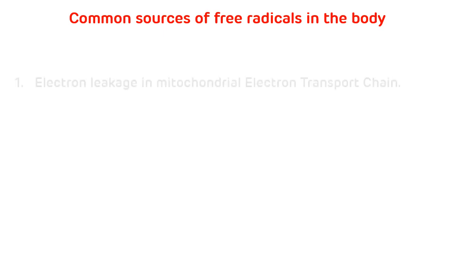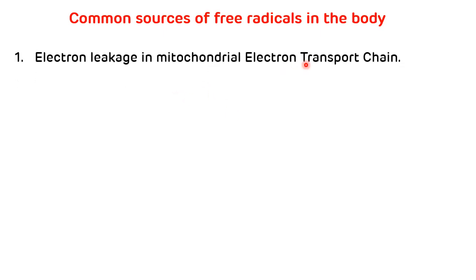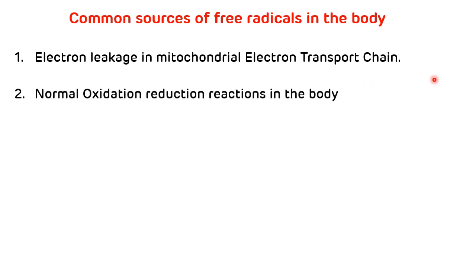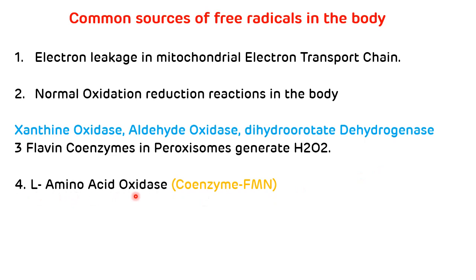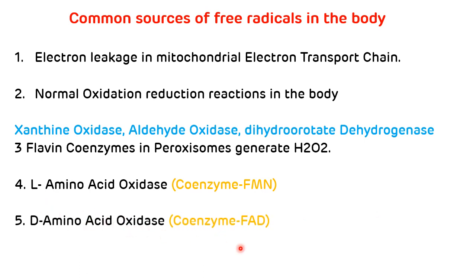Now, common sources of free radicals in the body: the first is electron leakage in the mitochondrial electron transport chain. Second are normal oxidation-reduction reactions, such as reactions catalyzed by xanthine oxidase, aldehyde oxidase, and dihydroorotate dehydrogenase. Flavin coenzymes in peroxisomes generate hydrogen peroxide. L-amino acid oxidase requires FMN, D-amino acid oxidase requires FAD, and lastly the respiratory burst.